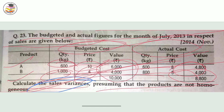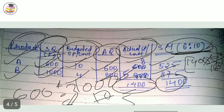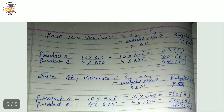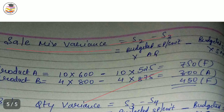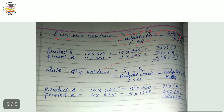Next is sale mix variance (S2 minus S3). Put in Product A and Product B values — the answer comes out, though it may not match the textbook answer, but it is correct. Sale quantity variance (S3 minus S4) gives 1250 adverse.